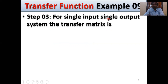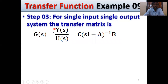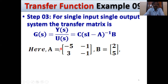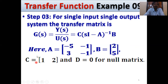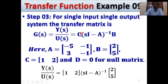Step 3: For a single-input single-output system, the transfer function Y(s)/U(s) = C · (sI - A)⁻¹ · B, because D is zero or null matrix. Calculate C · (sI - A)⁻¹ · B. Here A is known: [-5, -1; 3, -1], B is known: [2; 5], C is known: [1, 2], D is null matrix. Now calculate (sI - A)⁻¹.